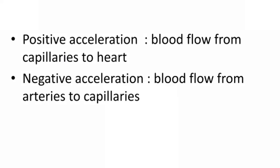An example of positive acceleration is blood flow from capillaries to the heart. Negative acceleration is blood flow from arteries to capillaries. When blood flows from capillaries to the heart, speed is more because blood is entering from small vessels into large arteries. In the case of negative acceleration, when blood flows from arteries to small capillaries, its velocity decreases. So when velocity increases, it is called positive acceleration; when it decreases, it is called negative acceleration.